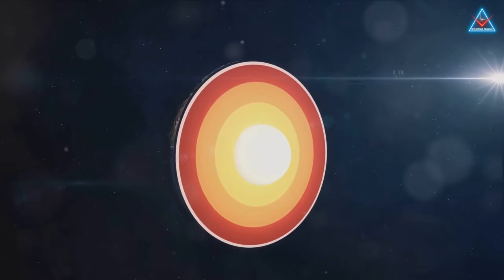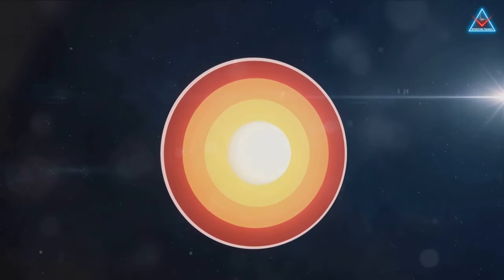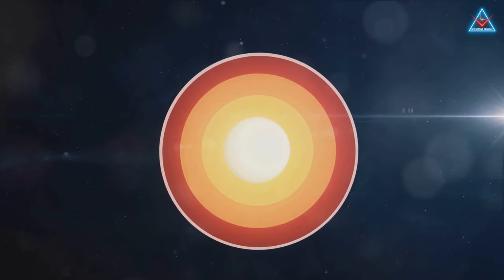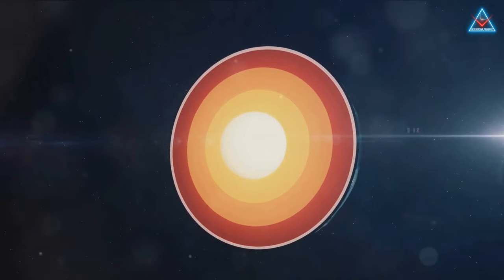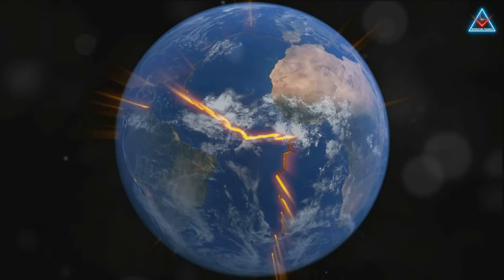The outer core, a sea of molten iron and nickel, generates our planet's magnetic field. The inner core, despite the intense heat, remains solid due to the immense pressure it experiences.